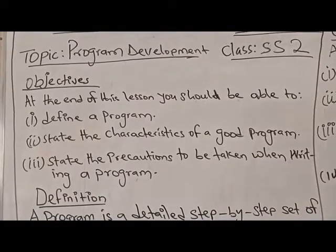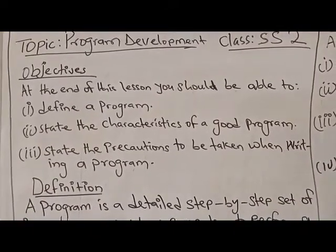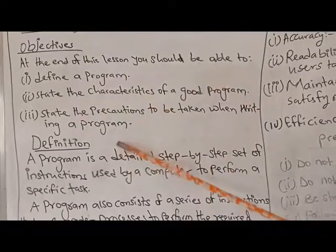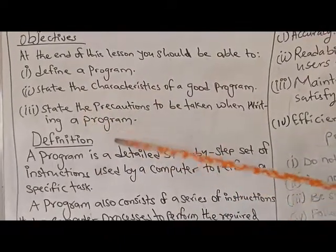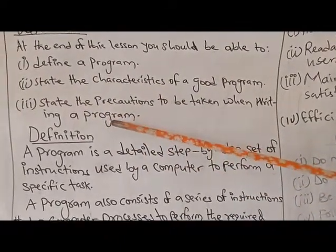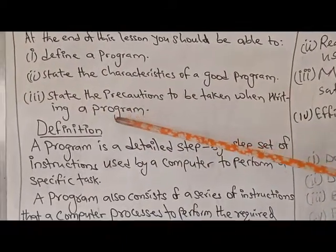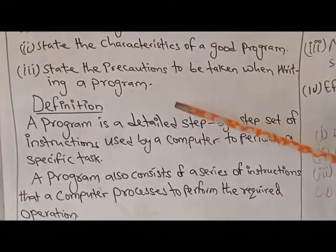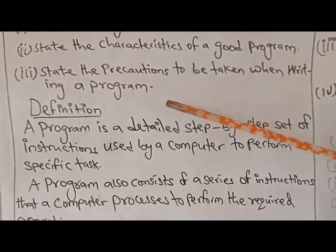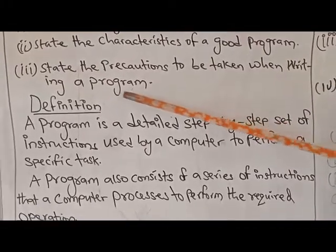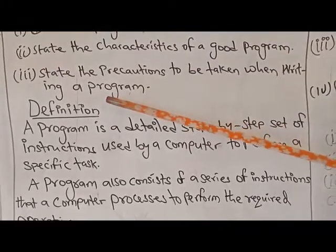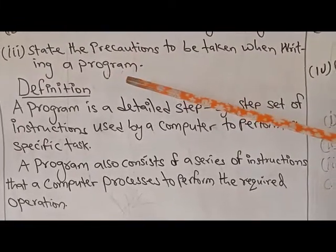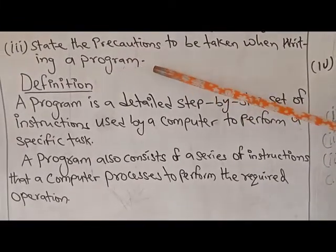Notice the difference in spelling: a computer program ends with only one M, while the program of wedding events or burial events ends with M-E — 'programme'.